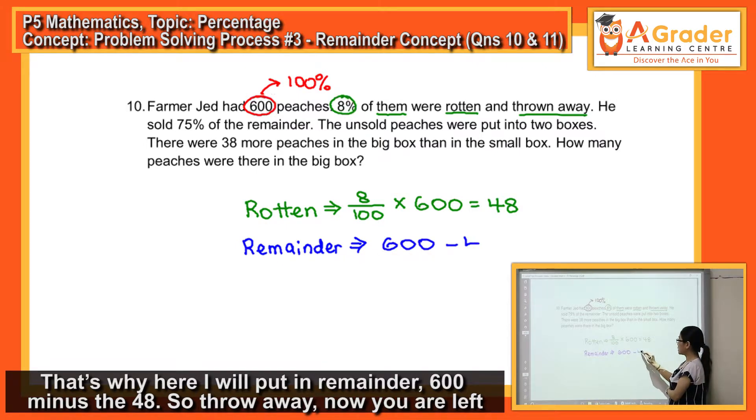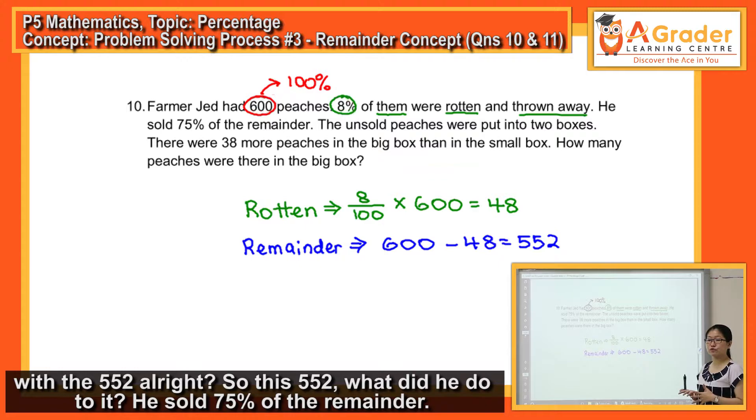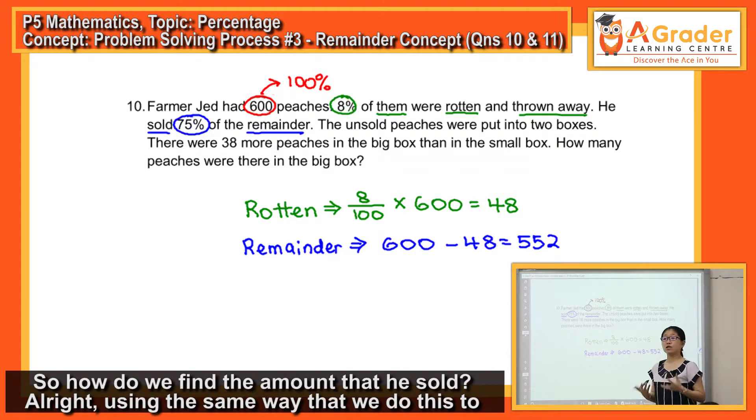600 minus the 48. So throw away, now you are left with this 552. So this 552, what did he do to it? He sold 75% of the remainder. So how do we find the amount that he sold?